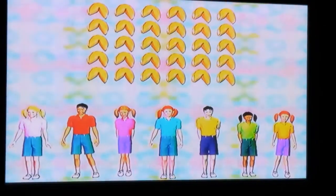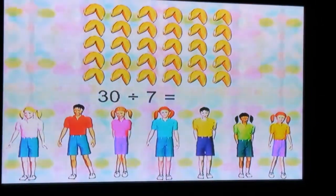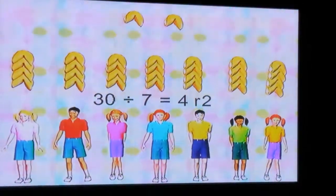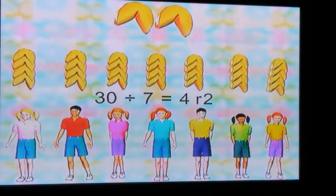Sherry had 30 fortune cookies. She wanted to divide them equally among seven friends. How many fortune cookies does each friend receive? The answer is four, with two left over.